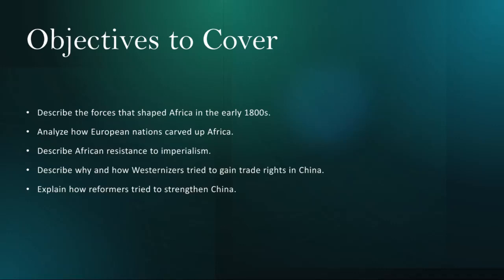In China, Western powers sought to gain trade rights and access to lucrative markets through diplomatic and military means. Westernizers like the British East India Company, and later European nations including Britain, France, and Germany, pressured China to open its ports and allow unrestricted trade. These efforts culminated in the Opium Wars, which resulted in humiliating defeats for China and forced concessions to Western powers.